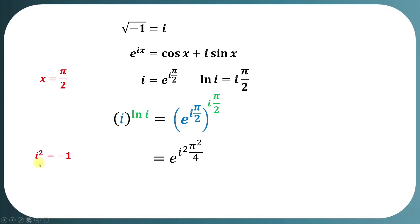Since i squared equals negative 1, we replace i squared by negative 1 in this expression, and we get e to the negative pi squared over 4.